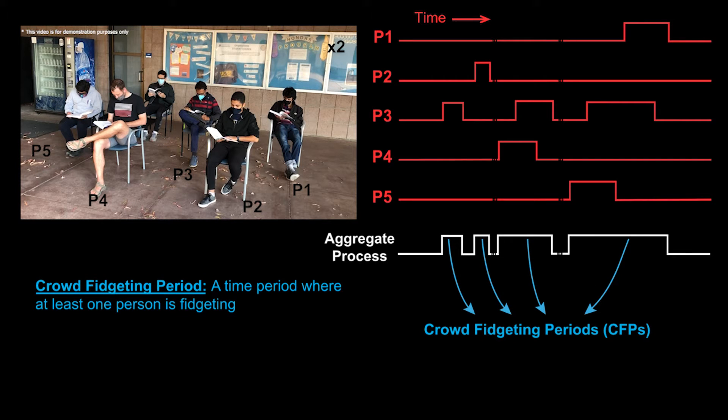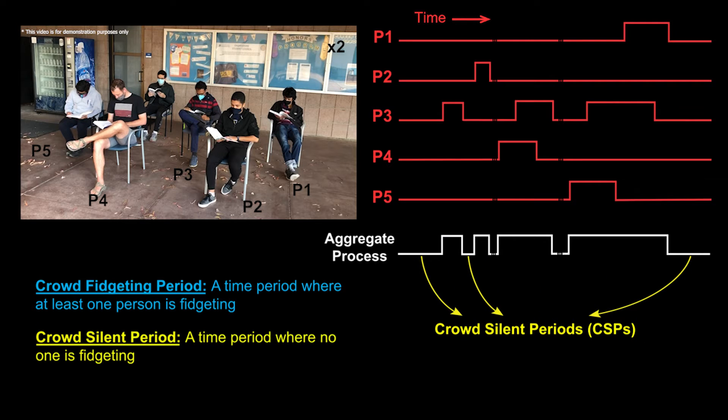We define a crowd fidgeting period as a time period where at least one person is fidgeting and the crowd silent period as a time period where no one is fidgeting. This aggregate fidget process is what the WiFi link will measure.